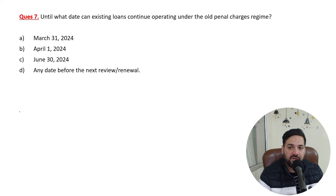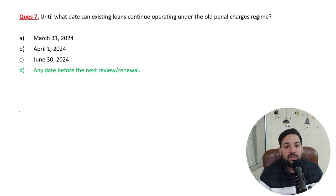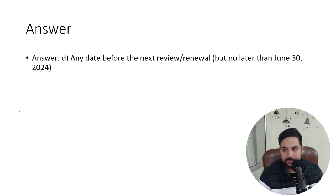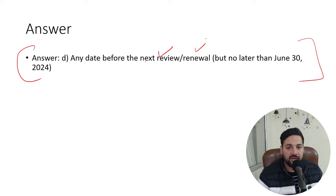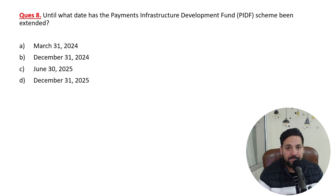Until which date can existing loans continue to operate under the old penal charges regime? Existing loans may continue under the old regime until any date before the next review or renewal, but not later than 30th of June 2024. That date is very important.